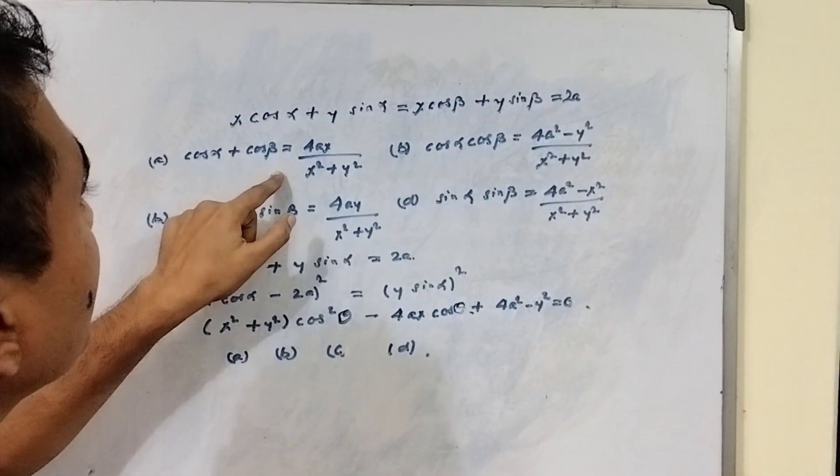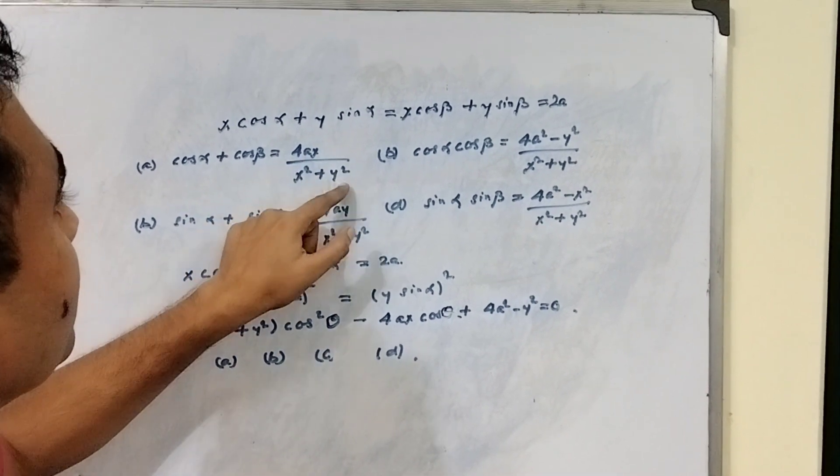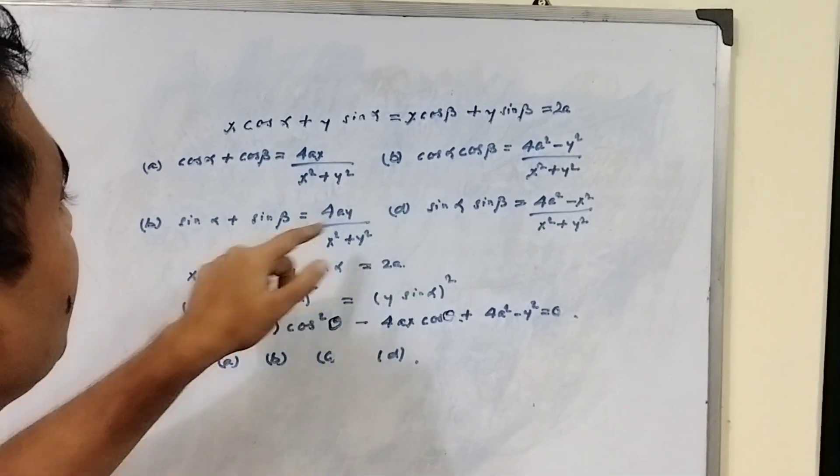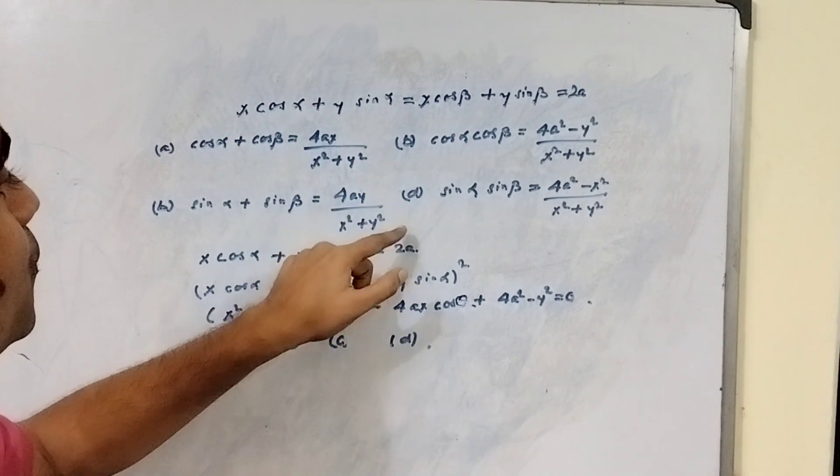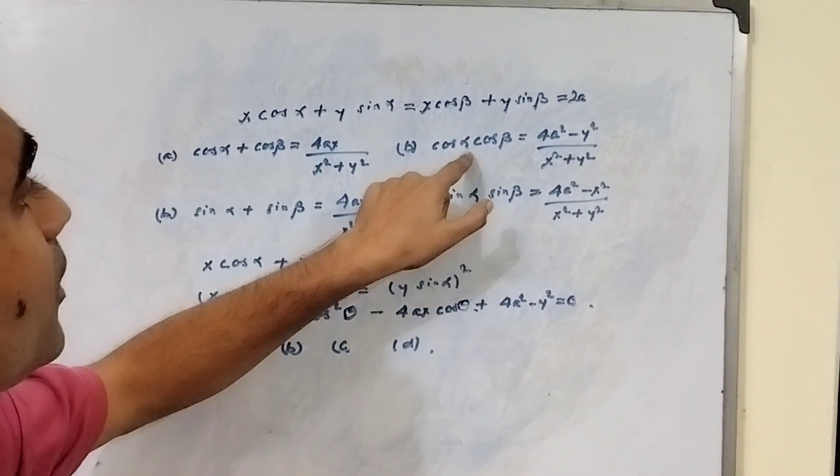Options are: (a) cos alpha plus cos beta is equal to 4ax by x square plus y square, (b) sin alpha plus sin beta is equal to 4ay by x square plus y square.